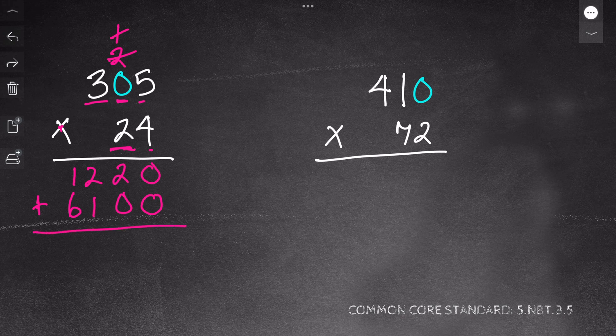Now I take my two partial products and I add them together. 0 plus 0 is 0, and 2 plus 0 is 2. 2 plus 1 is 3, and 6 plus 1 is 7. My answer is 7,320.